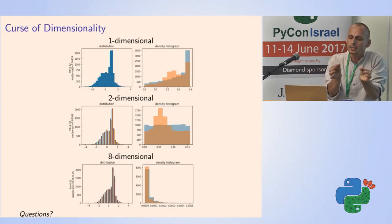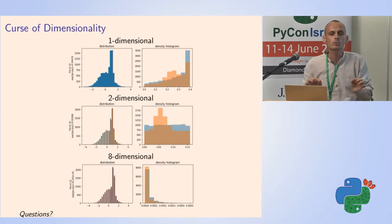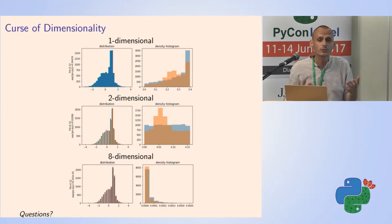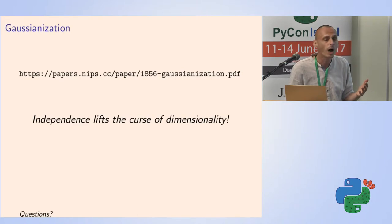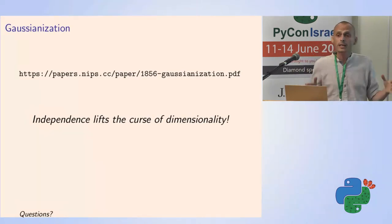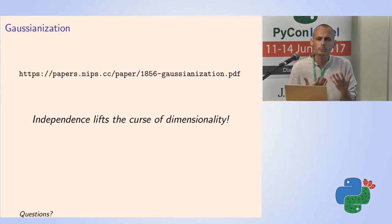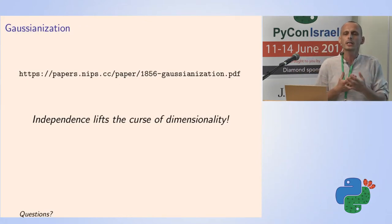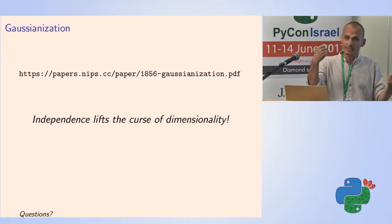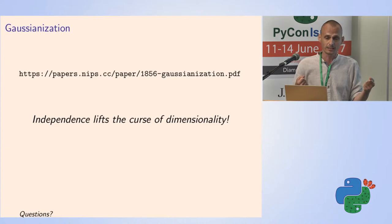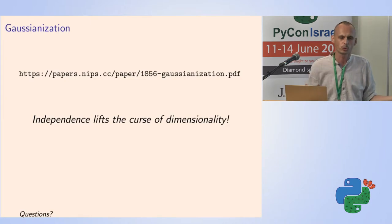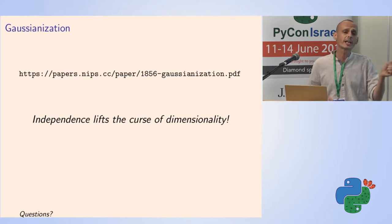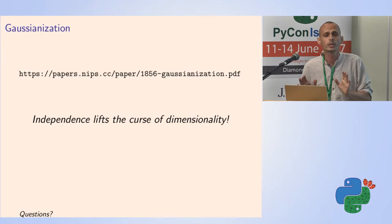Because of the curse of dimensionality, you cannot really use density estimation for high-dimensional distributions, except if you are able to transform your distribution into a representation where axes are independent and easy to analyze. If you have a function which transforms from your source distribution to a different distribution where all axes are independent and easy to analyze, then you can look at each axis individually, and one-dimensional distributions are manageable.